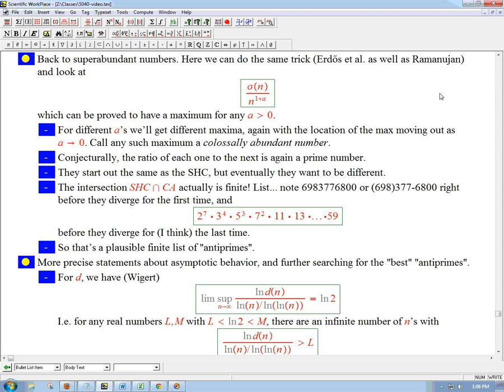So continuing on the quest to find a finite list of the best of the best divisible numbers, I want to go back to the sigma function and to superabundant numbers. We can do essentially the same trick as Ramanujan did with d(n) to σ(n). This goes back to Ramanujan - the part of his paper that didn't get published due to paper shortages in the 1910s. Erdős, the famous Hungarian mathematician, and his collaborators came up with something that they didn't realize they were redoing Ramanujan's work.